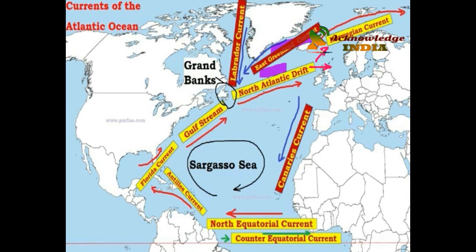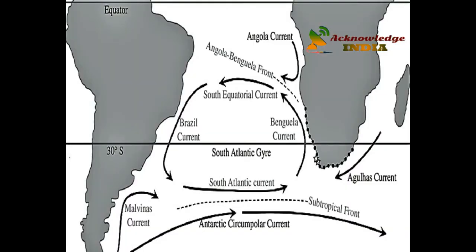The North Atlantic Drift bifurcates into two branches upon reaching the eastern part of the ocean. The northern branch continues as the North Atlantic Drift, reaches the British Isles, and then flows along the coast of Norway as the warm Norwegian Current, which is very useful for ship movement in ice-covered areas. The southern branch flows between Spain and the Azores Islands as the cold Canaries Current, which finally joins the North Equatorial Current completing the gyre.